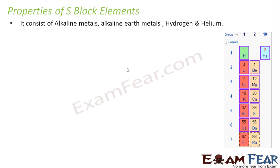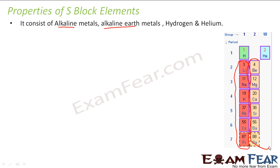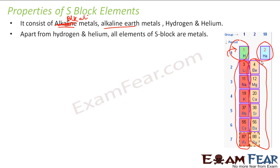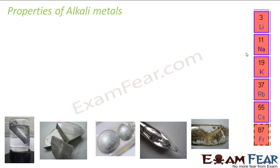Let us start with the properties of S-Block Elements. S-Block Elements consist of alkali metals — the ones in the dark pink — and alkaline earth metals — the ones in light pink. And then we have hydrogen and helium. Hydrogen we have already studied in the last chapter; helium we will study later. In this chapter we will be focusing on alkali metals and alkaline earth metals. Apart from hydrogen and helium, all S-Block Elements are metals.